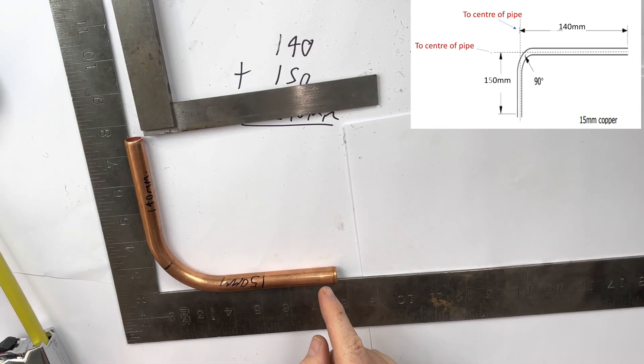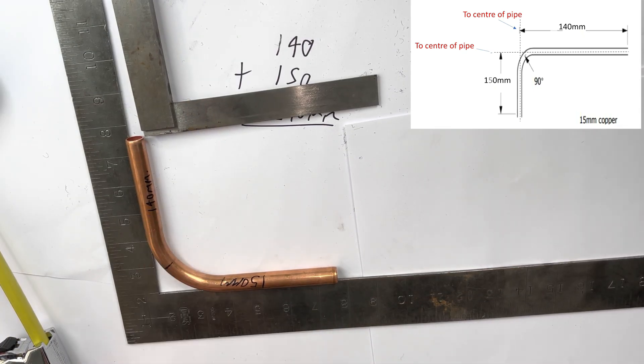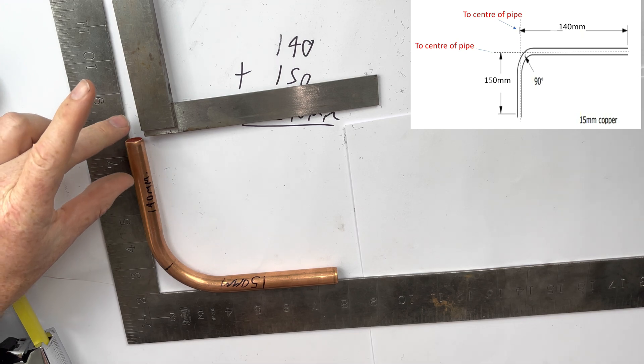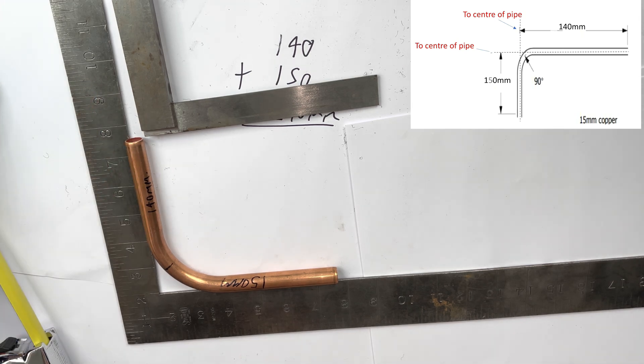Okay so there you have 150 mm and 140 mm. What we've done is we've measured this side accurately and we've had to cut where it's gained in length. We've had to cut some of the pipe off.